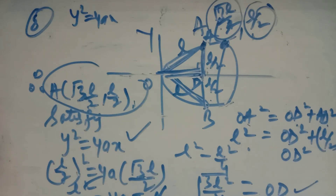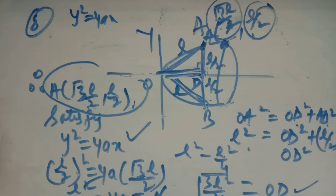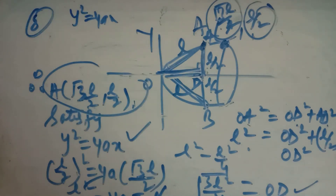These are some practical problems in the miscellaneous exercise based on conic sections. This is the completion of your chapter — Conic Section. Revise it again; it is a somewhat easy chapter related to the previous chapter we have done, that is straight lines. Thank you and best of luck.